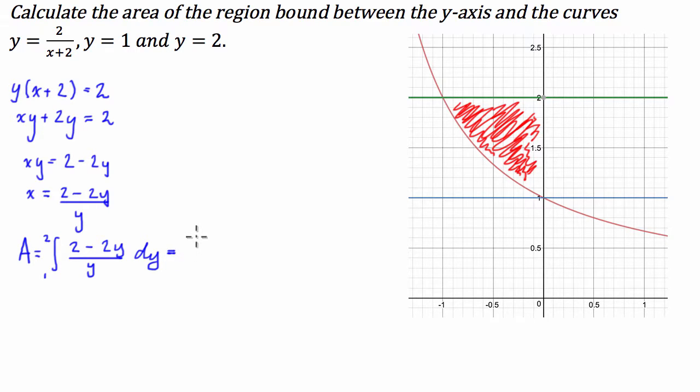So this is a fairly stock standard method to do these integral problems. This is equal to the integral from 1 to 2 of 2 over y dy minus the integral from 1 to 2 of 2y over y, which is just the integral from 1 to 2 of 2 dy.